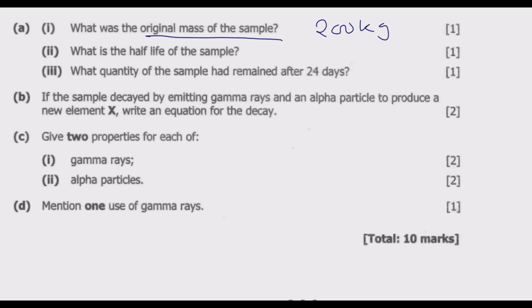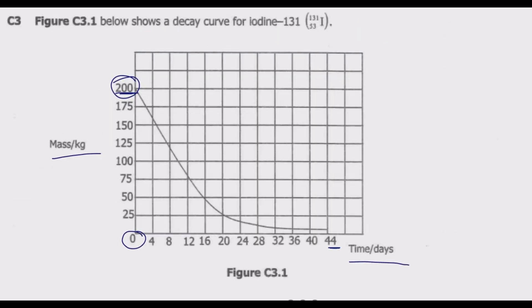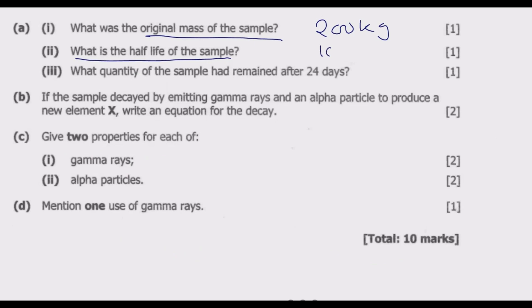What is the half-life of the sample, which is question 2 of A? The half-life is the period it takes for the sample to reduce to half of the original. Half of 200 is 100. We go to the graph and find the number of days when the sample is 100 kg. This is halfway between 8 and 12, so the number is 10 days. The half-life is 10 days.